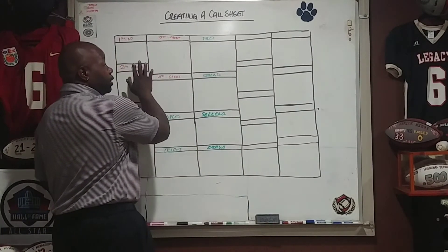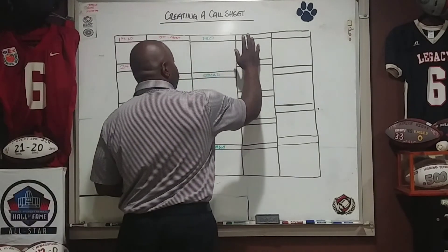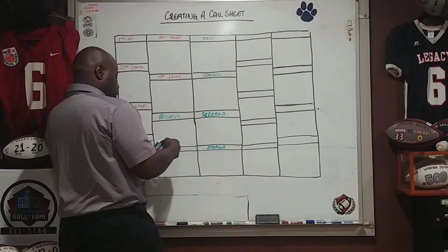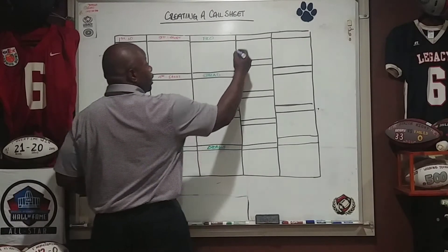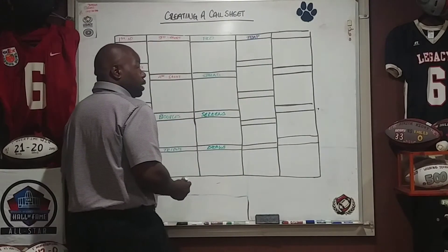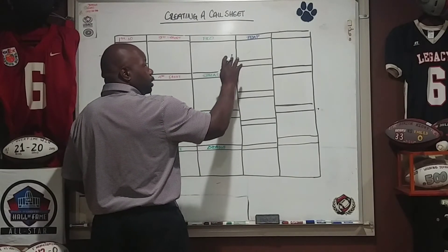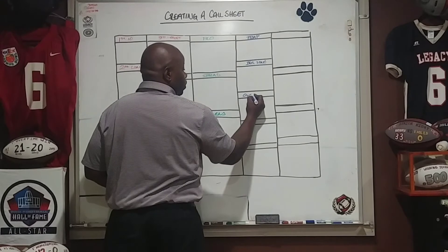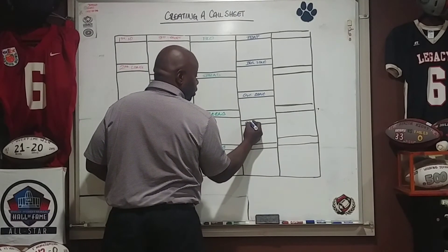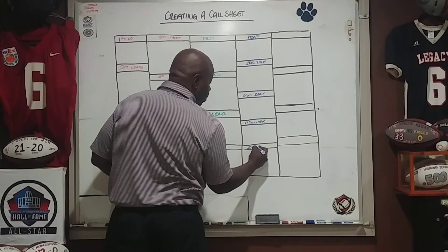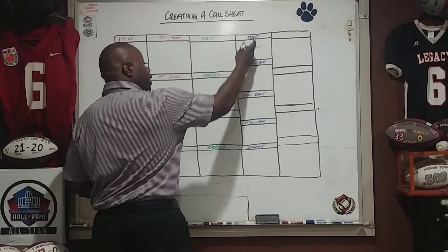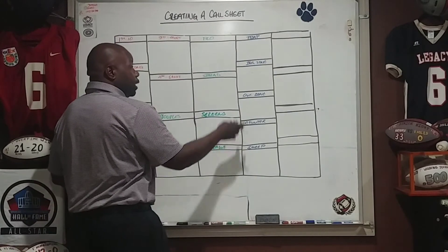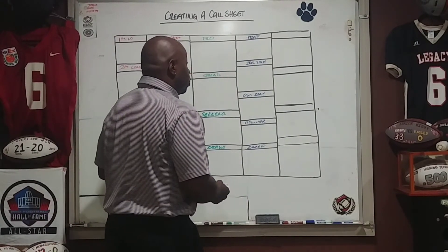Now as we go to our next column — we went over down and distance, we've added formations — some guys also like to go by the play type. So we create a run play column. We'll go with trap, inside zone, outside zone, counter, sweep. And then right here I have a list of plays that I know we can run that can be successful, that might catch the defense off guard and work there.